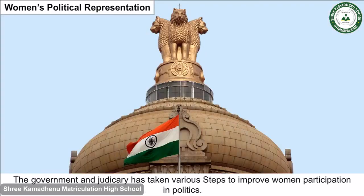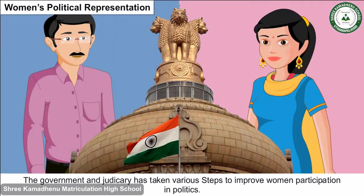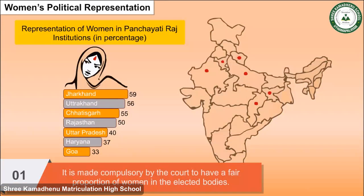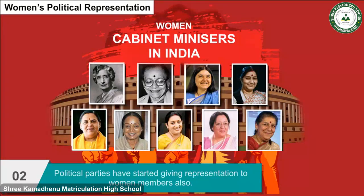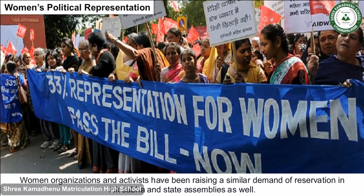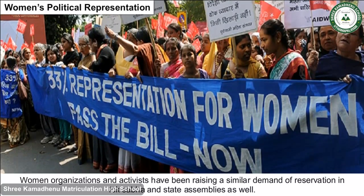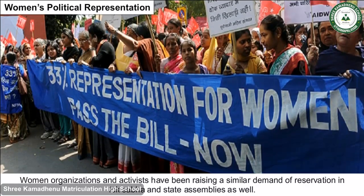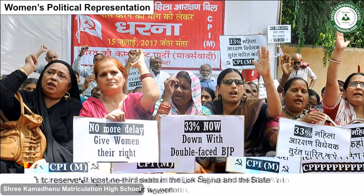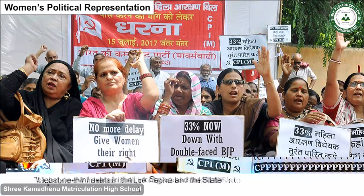The government and judiciary have taken various steps to improve women's participation in politics. For example, it is made compulsory by the court to have a fair proportion of women in elected bodies, and political parties have started giving representation to women members. Women's organizations and activists have been raising a demand for reservation in Lok Sabha and state assemblies, aiming to reserve at least one third of seats for women.